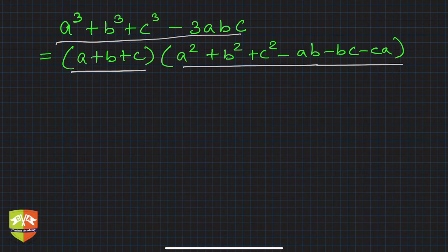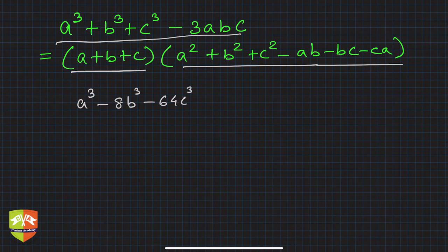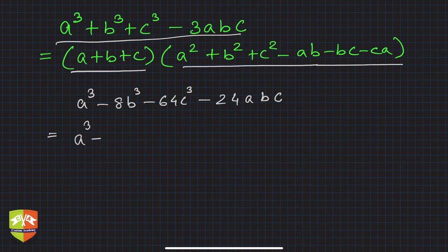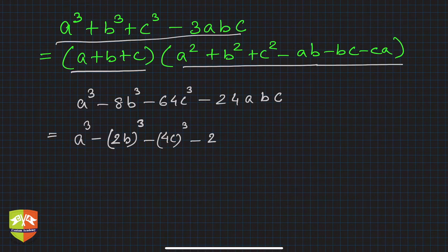Let's say you have been given the expression a cube minus 8b cube minus 64c cube minus 24abc. First of all, reduce it into complete cubes. So this is a cube. Minus 8b cube can be written as 2b to the power 3. Minus 64c cube can be written as minus 4c to the power 3. And 24 can be written as 3 times a times 2b times 4c.